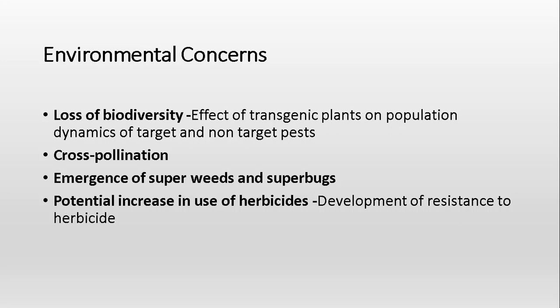Now, environmental concerns. Loss of biodiversity and the effect of transgenic plants on population dynamics — transgenic plants can affect the population dynamics of both targeted and non-targeted pests. Microorganisms, plants, and animals all have a combined effect on biodiversity, so GMOs being a new, non-natural variety somehow contribute to biodiversity in good or bad ways. Another issue is cross-pollination — if GMOs cross-pollinate, there are chances of gene flow, which can produce uncontrollable or mutated plant varieties, or superweeds.